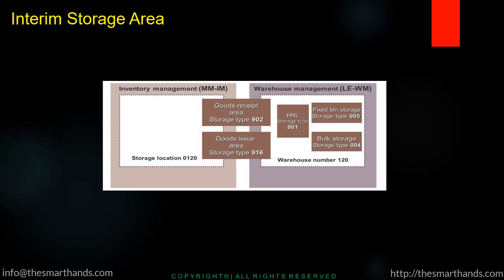Before we learn about this, we need to remember the interim storage type as discussed in the previous videos. When you move stock from a storage bin after a GR transaction, it arrives in interim storage type 902. But when you remove stock for an outbound delivery, it will first arrive in storage type 916, which is the goods issue area.